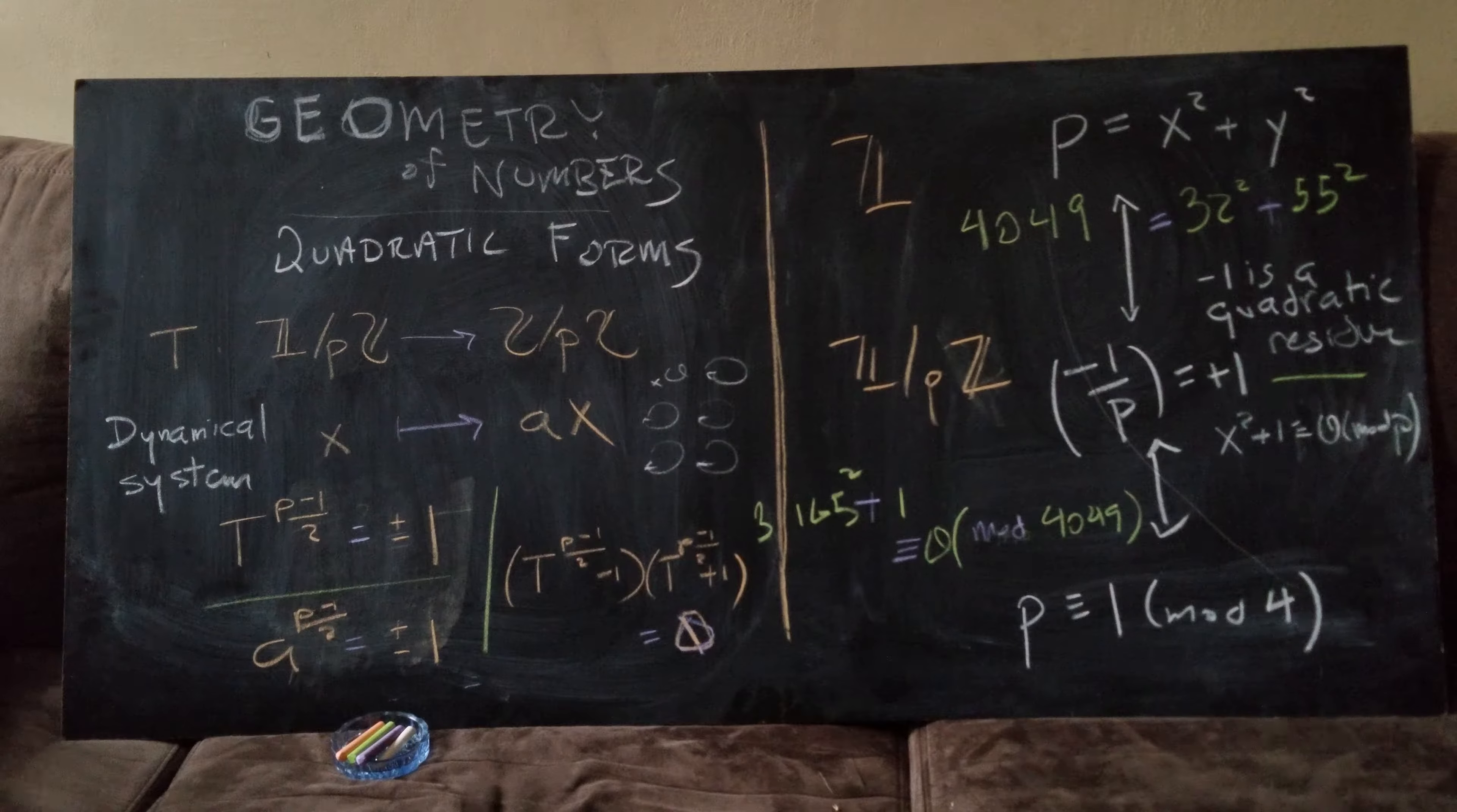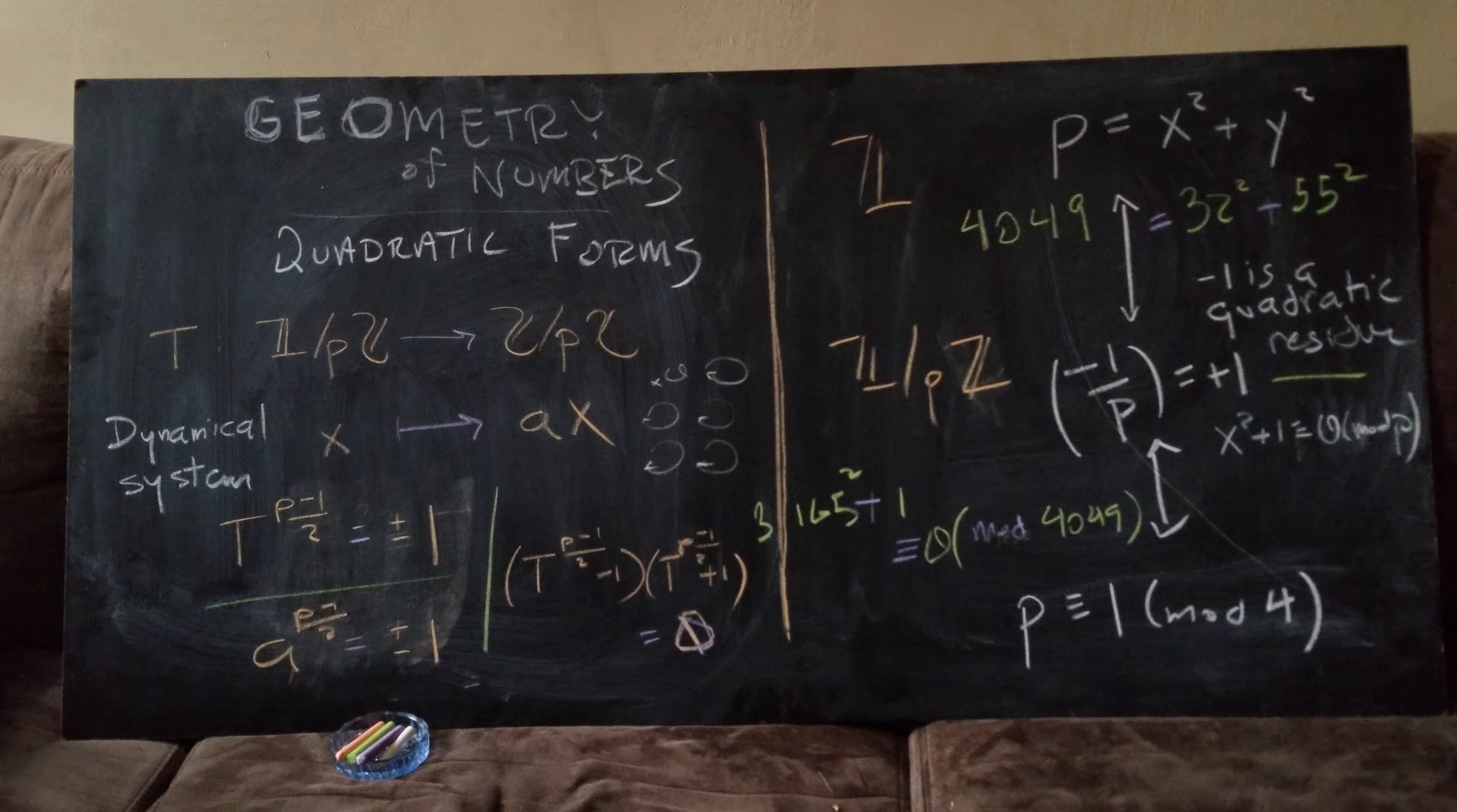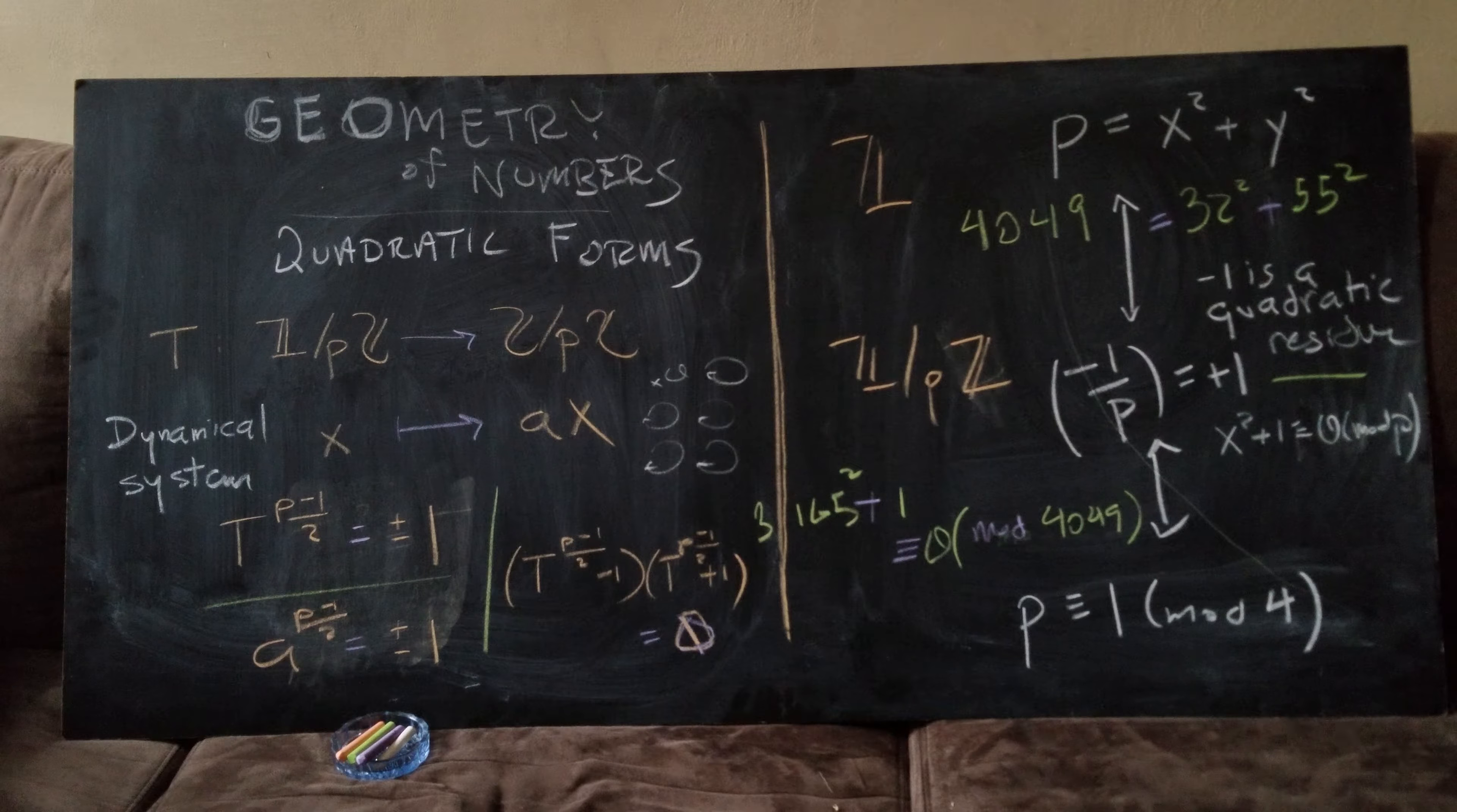And we said a to be minus one, and p is a 4k plus one prime, and we get the middle line. We have to do a bit more counting to be sure we got minus one instead of one.